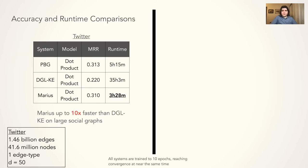First, comparing the systems on the Billion Edge Twitter social graph, we find we are able to train embeddings in 3.5 hours, whereas DGLKE takes 35 hours. We also find we are about 1.5x faster than PyTorch Big Graph with similar or better MR than both systems, where MR is a metric for link prediction accuracy.